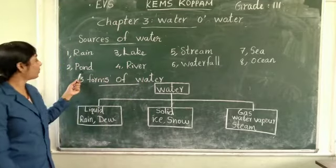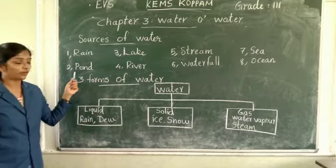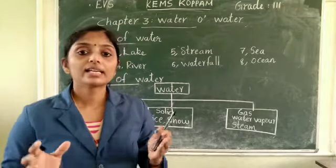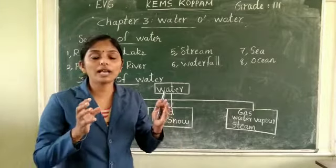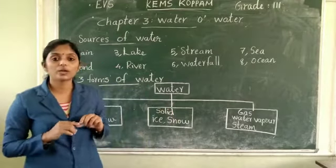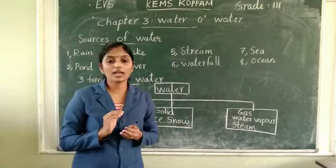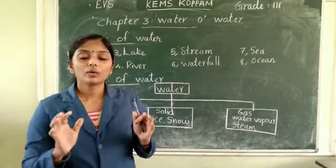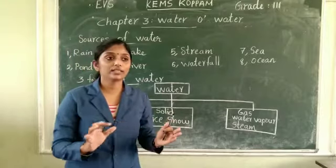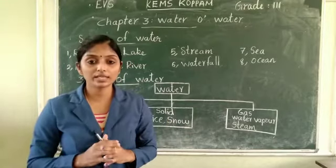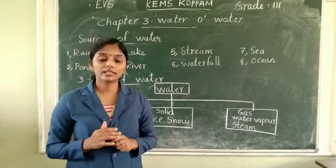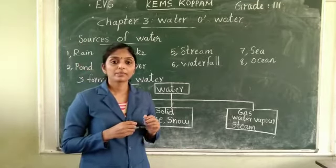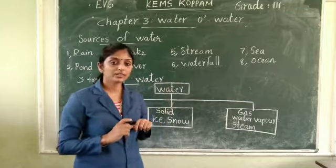The next source is a pond. What is a pond? A pond is a small and still water body. Still means the water does not flow. A small and still water body is called a pond.